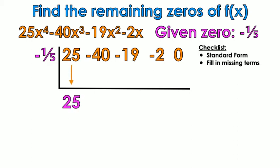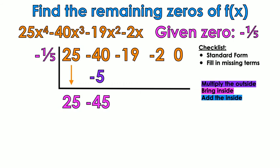Bring down the 25. Multiply the outside. Bring it inside. 25 times negative 1 fifth is negative 5. I'm going to add the inside. Negative 40 plus negative 5. Negative 45. Repeat the process. Multiply the outside. Negative 1 fifth times negative 45. Bring it inside. 9. Negative 19 plus 9. Add the inside. Negative 10.